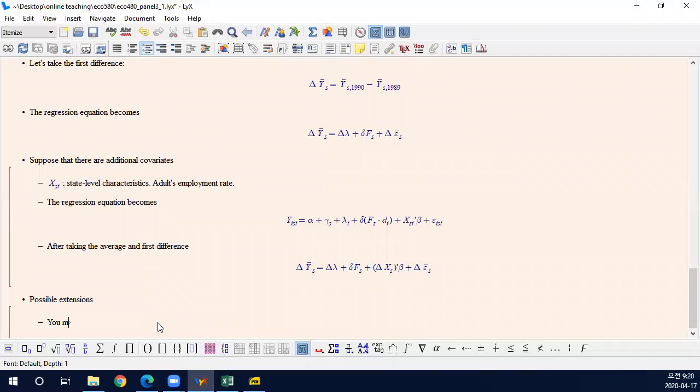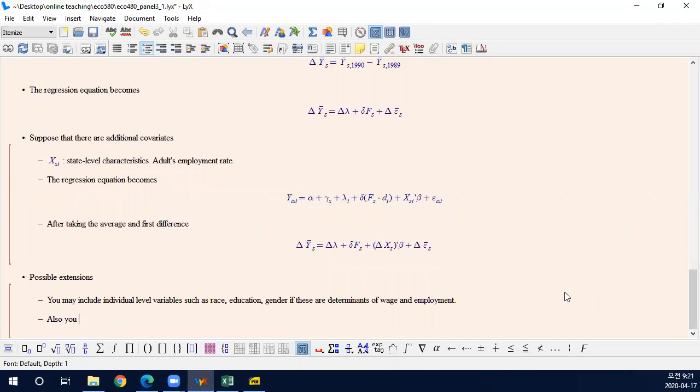Also, what's interesting here is you may include individual level variables such as race or education or gender. So maybe your wage when, if these are determinants. So the next steps, you may include individual level variables.